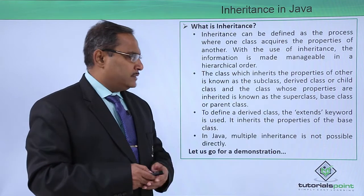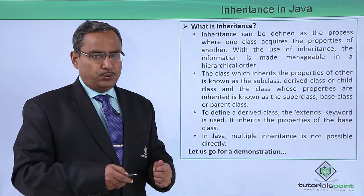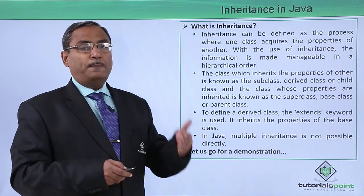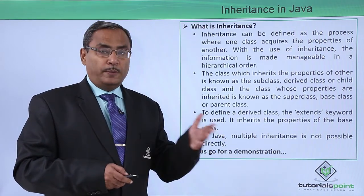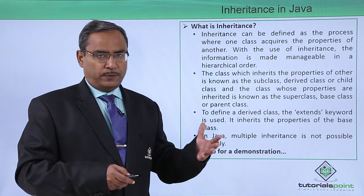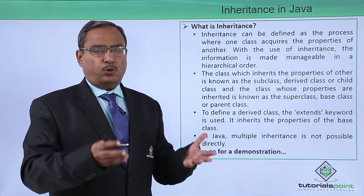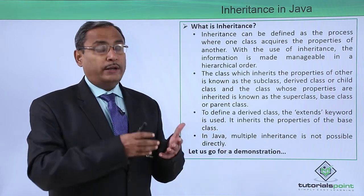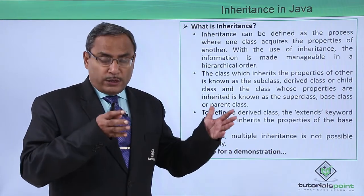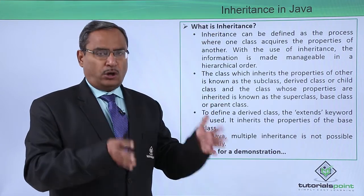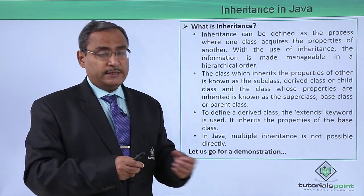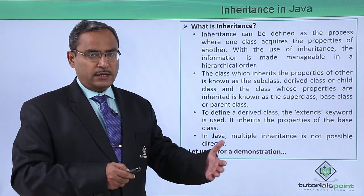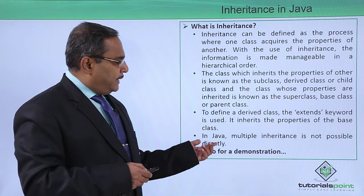To define a derived class, the extends keyword is used in Java code, and it inherits the property of the base class. Which properties will be inherited depends on the scope of those properties — whether they are defined under private, public, protected, or default scope. The scope of the variables or methods will decide whether they will be inherited to the child class or sub class.